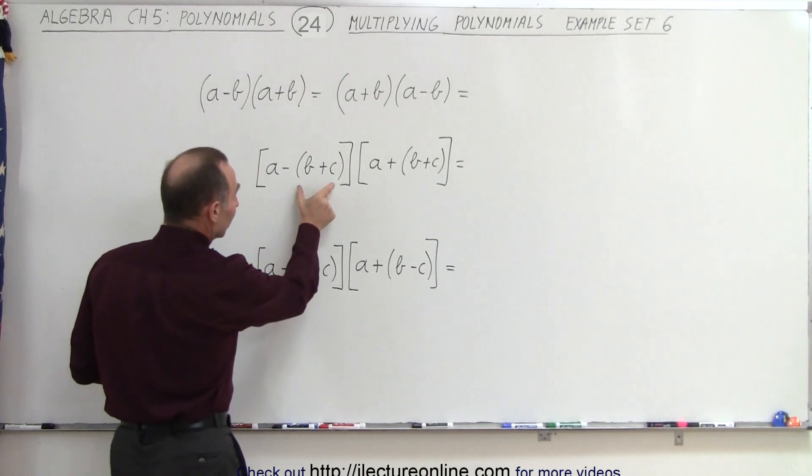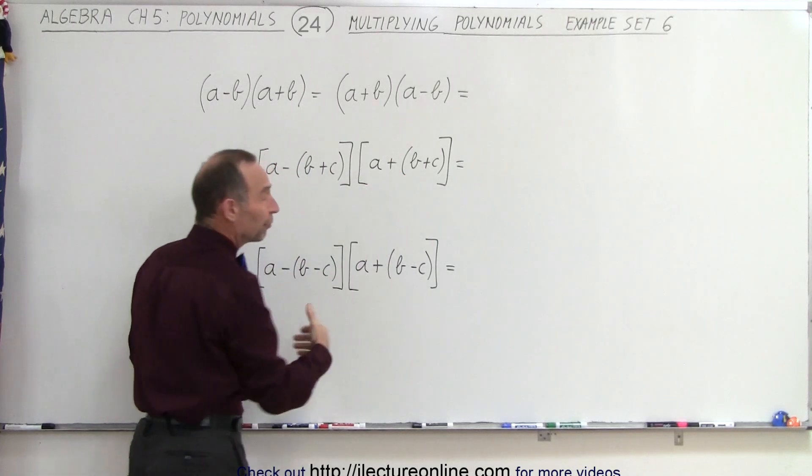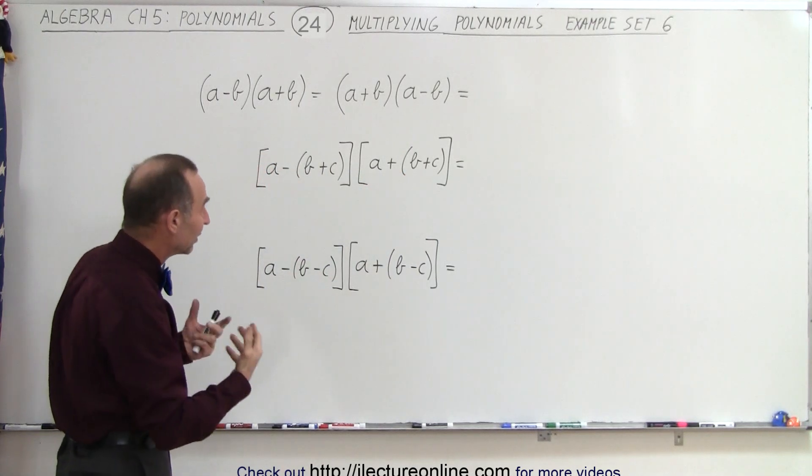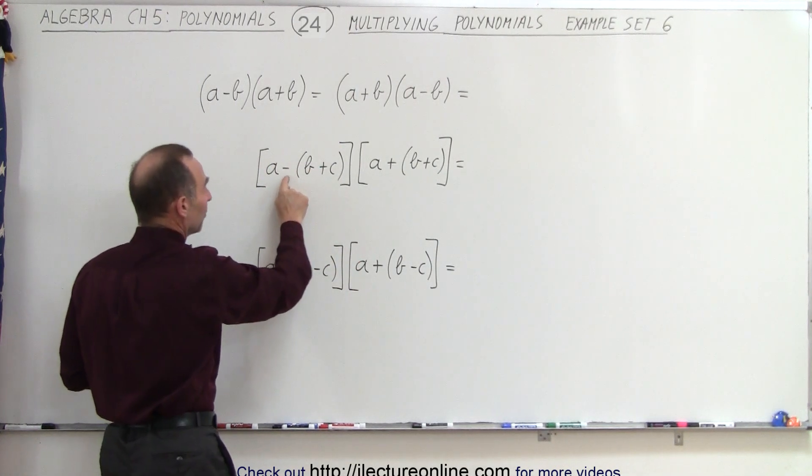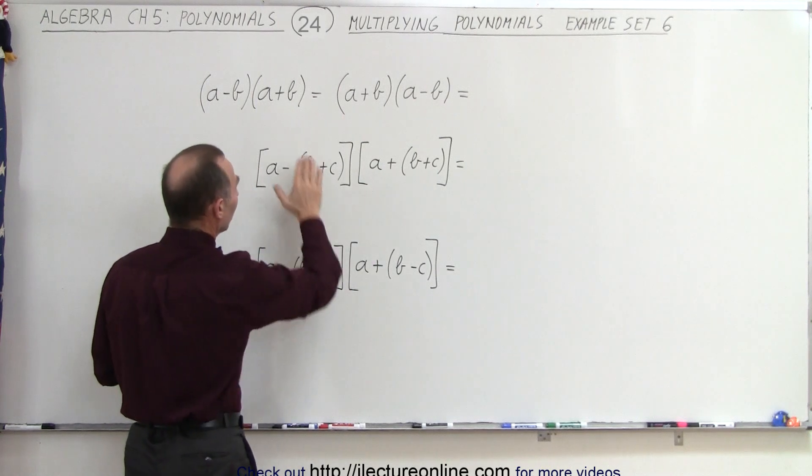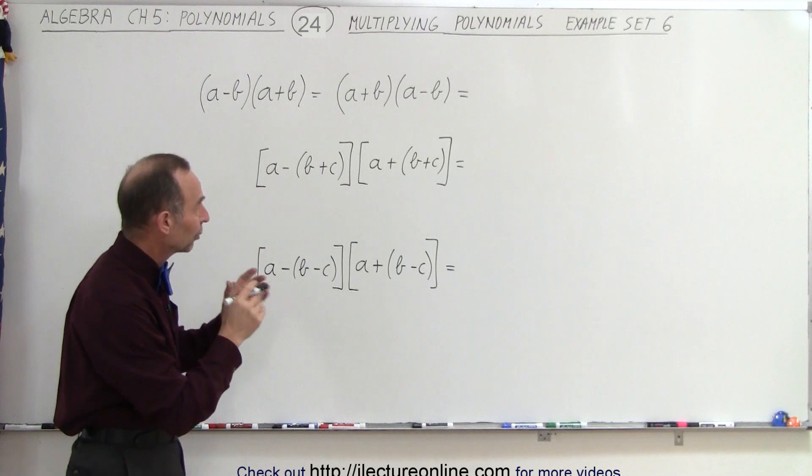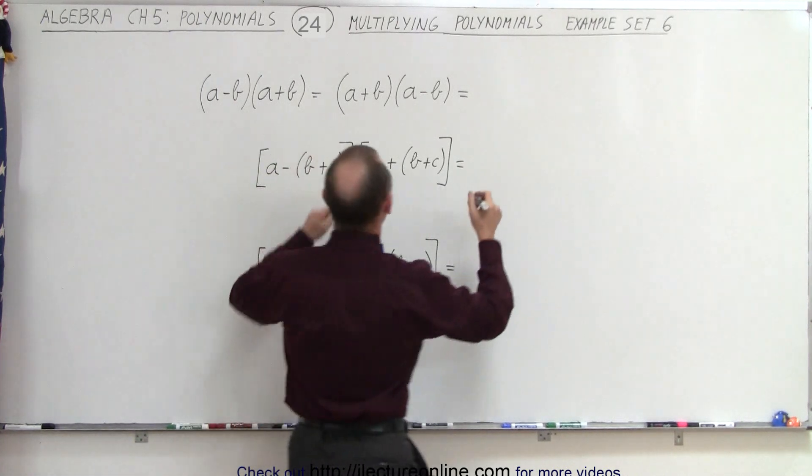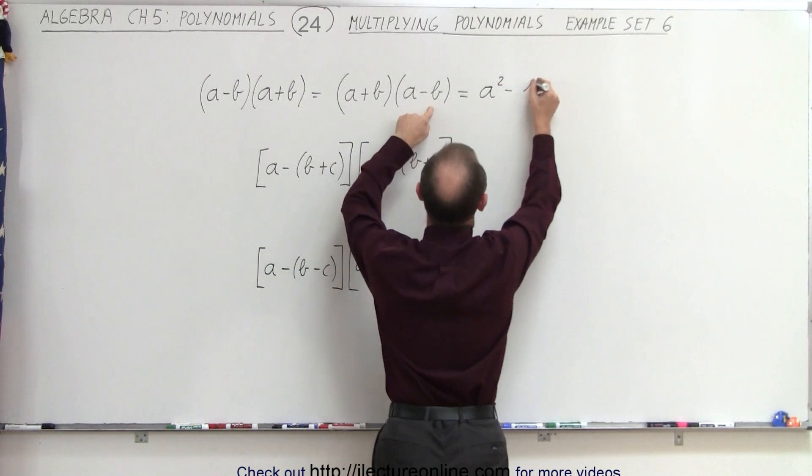For example, if you think of this as a single term, we simply have the difference and the sum of two binomials that are identical in any other way. It looks exactly like what we have over here, and it doesn't matter if it's negative positive or positive negative. When we have the sum and the difference of two binomials that otherwise are exactly the same, this is written as the first term squared minus the second term squared.